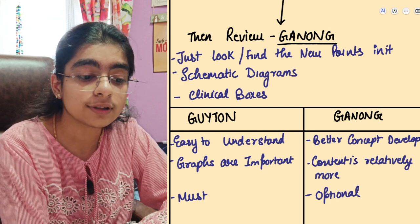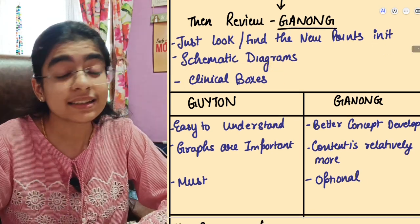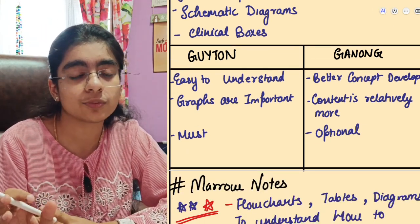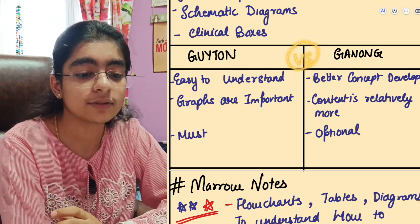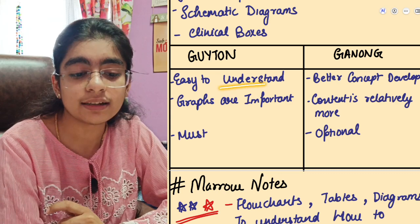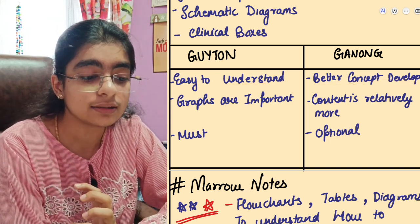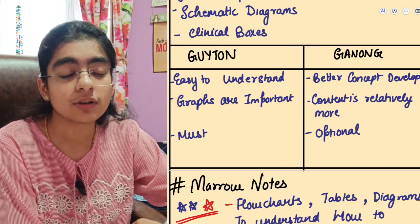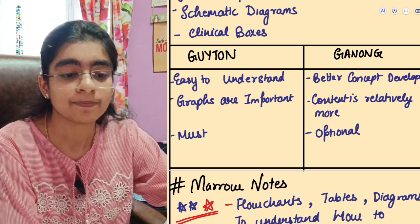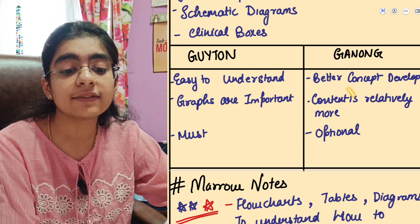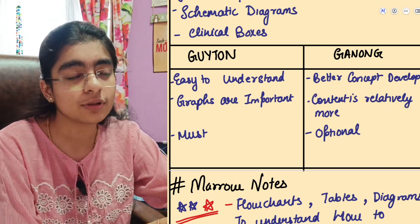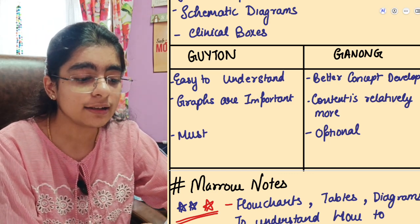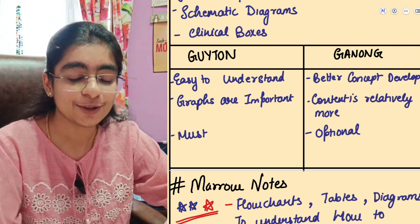Also read the clinical boxes carefully. Guyton has fewer clinical boxes, but Ganong has more applications with better concept development. Comparing the two: Guyton is easier to understand; Ganong offers better concept development. Guyton's graphs are very important and are directly asked in spotters or practical exams. Ganong's content is actually more dense despite appearing smaller. Guyton is a must-study; Ganong is relatively optional if you are short on time.